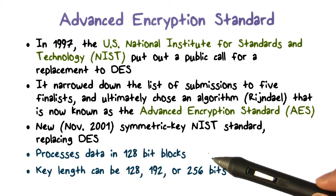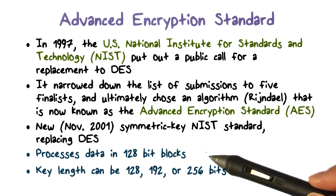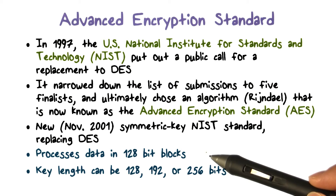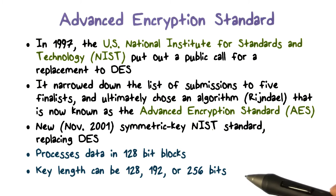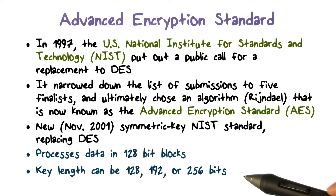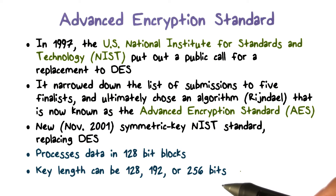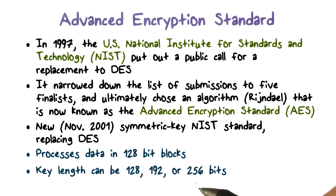Like DES, AES is also a block cipher. Whereas in DES the input plaintext block is 64 bits, in AES it is 128 bits. In DES, the key length is only 56 bits. In AES, it can be 128, 192, or 256 bits. These key lengths are considered long enough to defeat brute force attempts to search for the key.